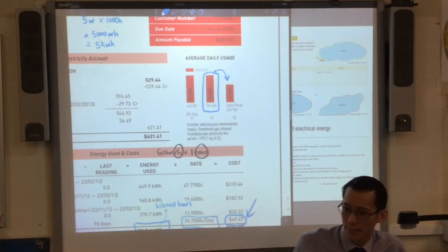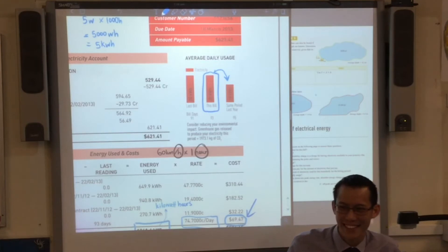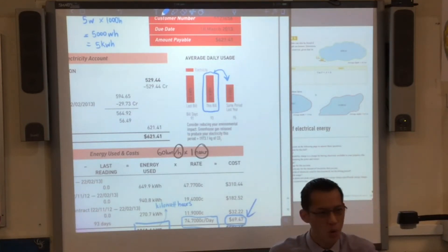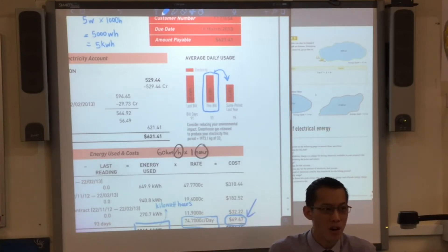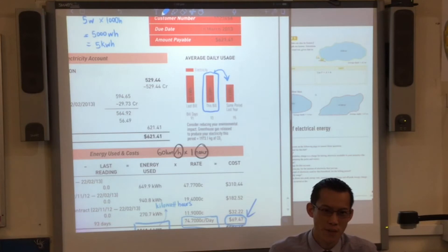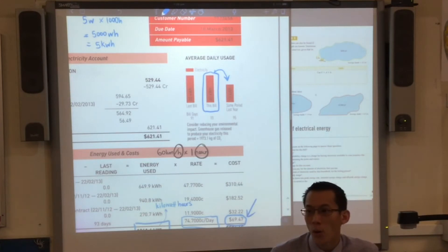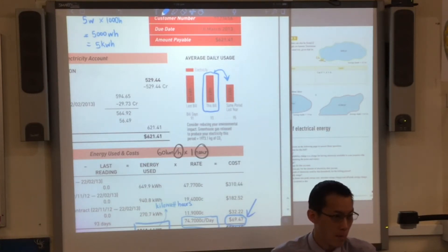A lot of power usage is just consistent all the time. In fact, one of the biggest power users in your house is on 24 hours a day, 7 days a week — you can never switch it off, otherwise you're in some trouble. Do you know what it is? Your fridge and your freezer, right? They're going all the time, but there are some things which are only on some of the time.